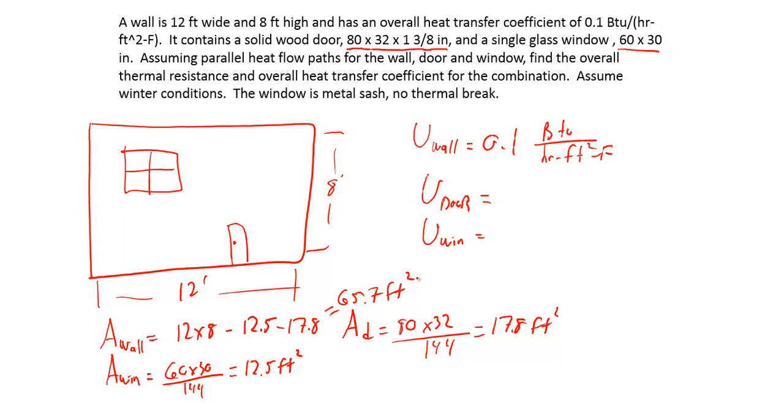Moving on from that, Table 5-8 gives you the thermal coefficients of doors. In this case, it's a wooden door, solid wooden door measured at 80 by 32. You can go ahead and see the tables and find that relatively simply. It's 1-3/8 inch thick, so a solid door 1-3/8 should give you 0.39 BTU per hour foot squared Fahrenheit.